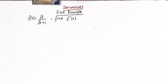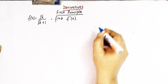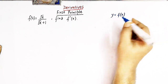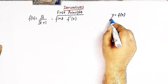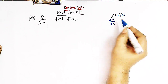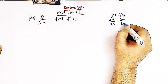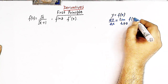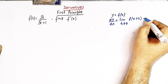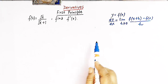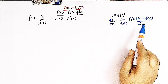So let us start and first quickly see the definition of derivative in terms of limits. Now suppose we have a function y = f(x), then the derivative of y with respect to x is given by dy/dx, and dy/dx is given by the limit as h tends to 0 of [f(x+h) − f(x)] / h. So the derivative is given by this limit.